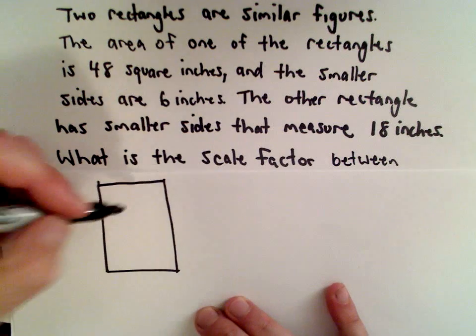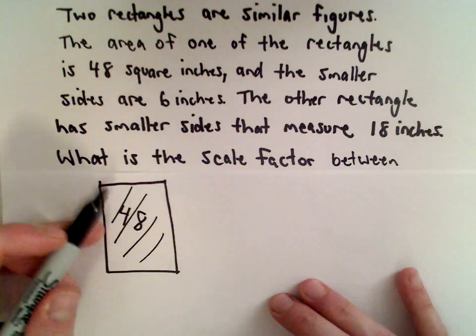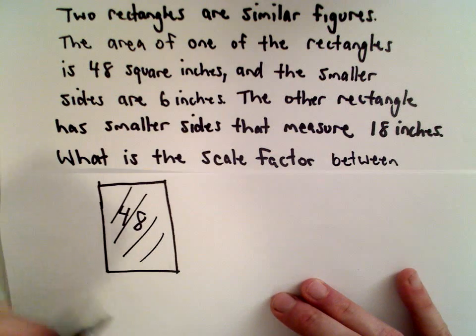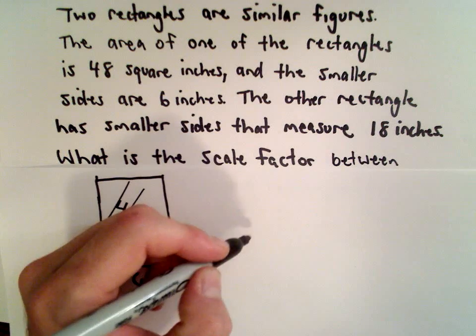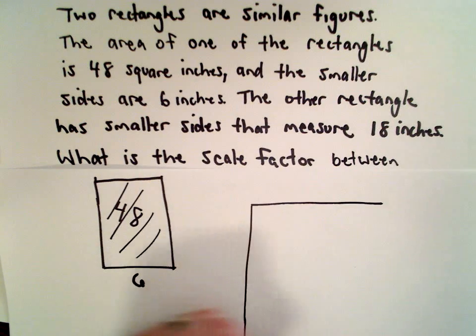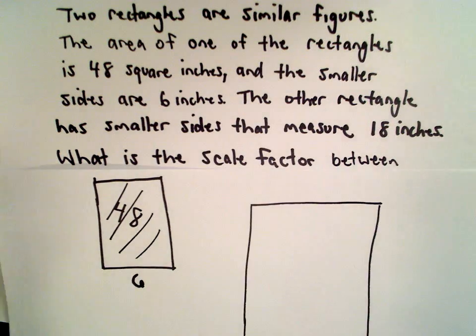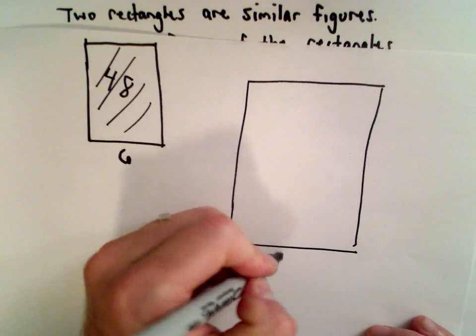Alright, so we've got the one rectangle that's 48 square inches. We know that its shorter sides are 6 inches long and then we have this other rectangle and it has smaller sides that measure 18 inches long.